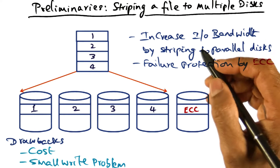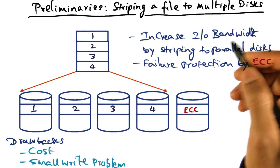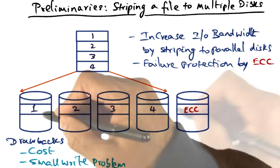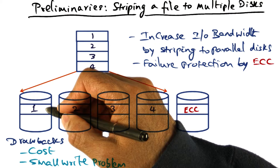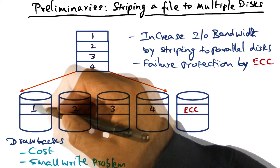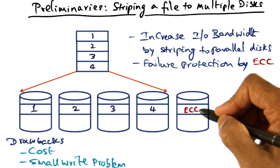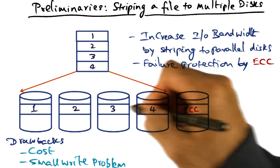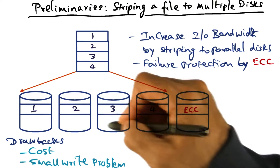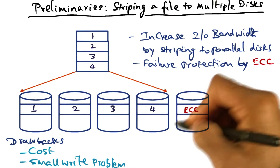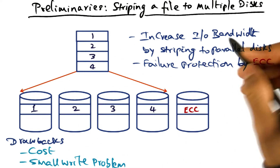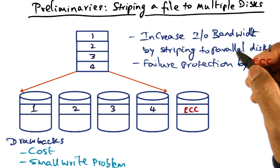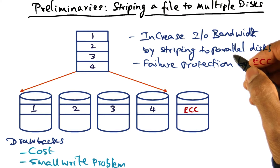RAID stands for Redundant Array of Inexpensive Disks. The idea is that a given disk may have a certain IO bandwidth available. Now if I can string together a number of disks in parallel, then cumulatively I can get much more IO bandwidth coming out of all of these disks. That's the idea of the RAID technology.